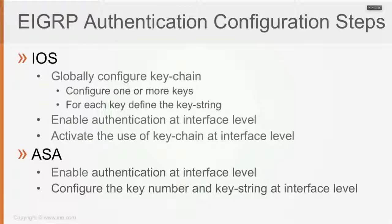So those are the basic steps of the EIGRP authentication configuration on iOS and the ASA, which we're going to be doing once we go to the ASA basic configuration on the CLI as well. Let's get started.